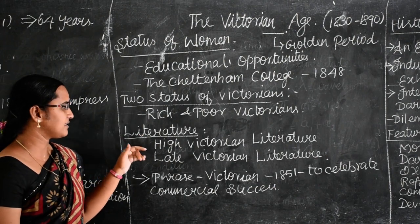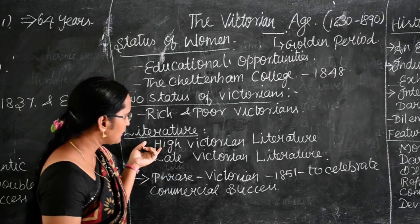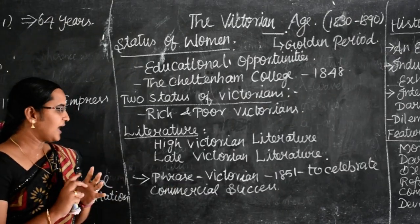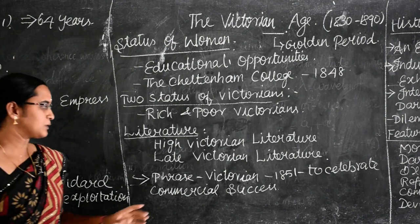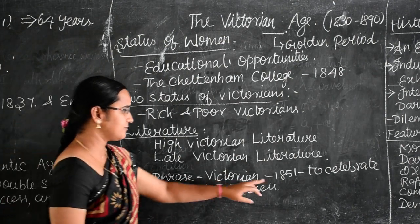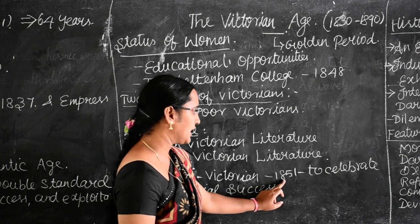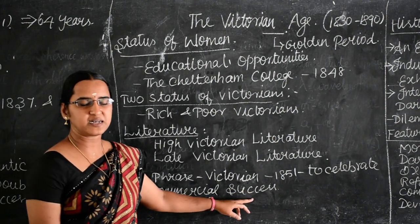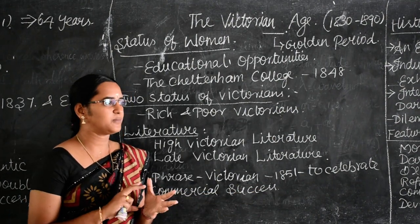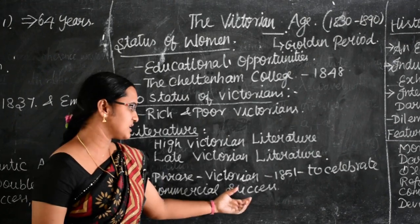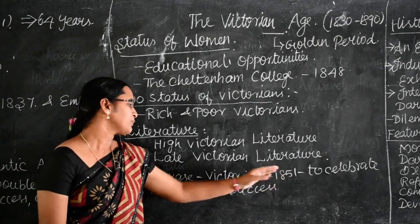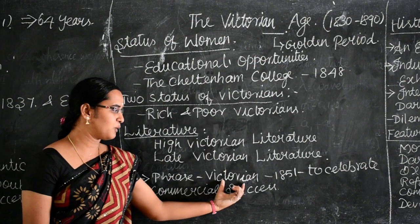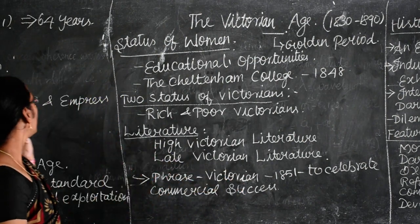Coming to literature, there are two types: high Victorian literature and late Victorian literature. We also have to know about the phrase 'Victorian.' It was a phrase first used in 1851, and it celebrated commercial success due to the industrial revolution in the Victorian age, in which so many things were invented. It also denotes the name of Queen Victoria.